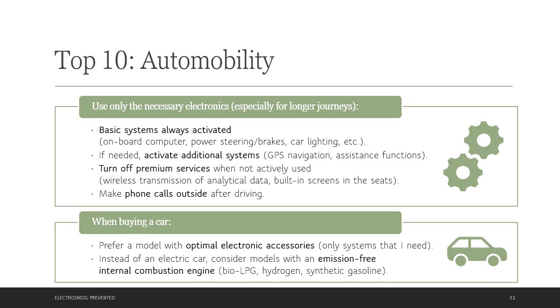Let's move to automobility. We should use only the necessary electronics, especially for longer journeys. Basic system needs to be always activated. Things like onboard computer, power steering, brakes, car riding and so on needs to be always on. We usually activate additional systems as we need them, like GPS navigation or assistance functions. We can turn off premium services when we not actively use them. This might include various transmission of analytical data, which is useful for manufacturer, but as drivers we don't need them. And also, if we have built-in screens in the seats, they also usually don't have to be on.